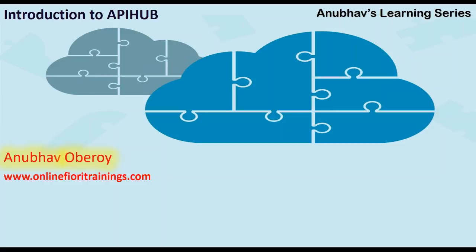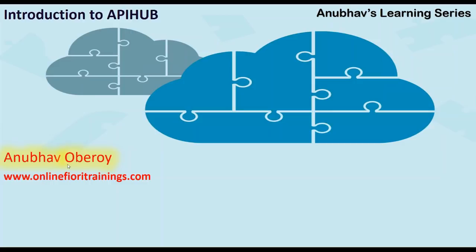These APIs will also help you build side-by-side extensions, especially if you are going for an S/4HANA Cloud implementation. An API typically acts as a central bridge for your cloud services and your digital applications. This bridge allows your applications to interact and access data securely over the cloud.